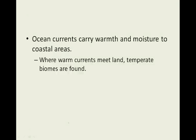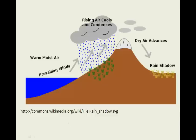Ocean currents carry warm air and moisture to coastal areas. Where warm currents meet land, temperate biomes are found — and that's where we live, in a temperate rainforest. Here's an image that shows the nice warm water. Some people call it the Pineapple Express because the currents that reach British Columbia actually come up from the region of Hawaii, and the water's nice and warm.